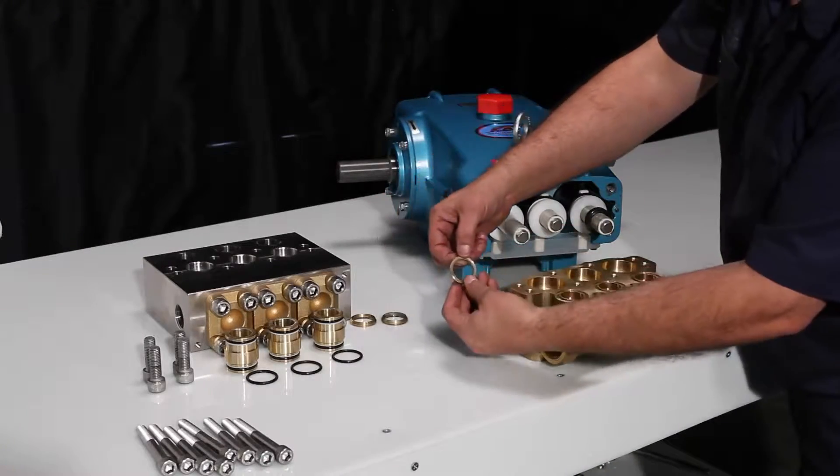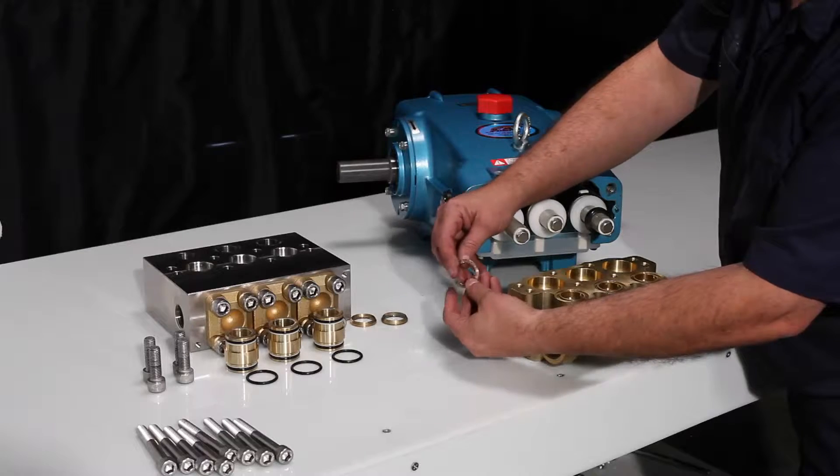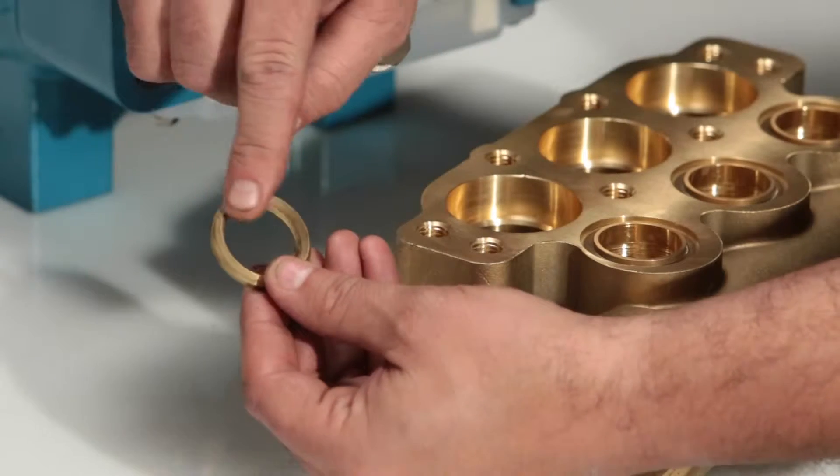Sometimes when removing the inlet manifold, the male adapter will fall out. One side is notched, one side is V-shaped.